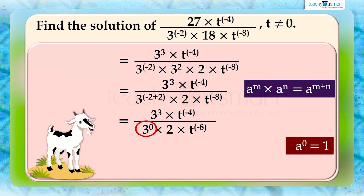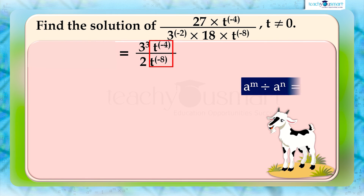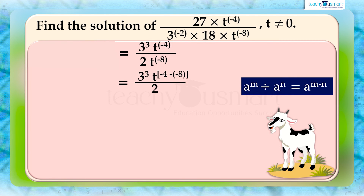We know that a raised to 0 equals 1. So it becomes 3 cubed multiplied by t raised to minus 4, divided by 2 multiplied by t raised to minus 8. Then by the law a raised to m divided by a raised to n equals a raised to (m minus n), we can write 3 cubed multiplied by t raised to (minus 4 minus minus 8), divided by 2, equals 3 cubed multiplied by t raised to (minus 4 plus 8), divided by 2, equals 27 multiplied by t raised to 4, divided by 2.